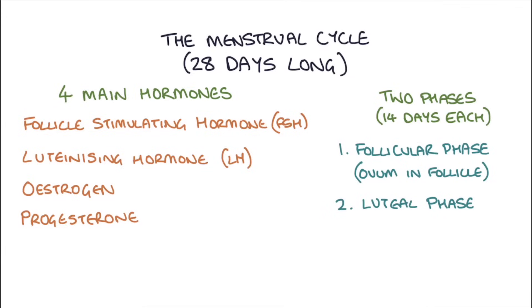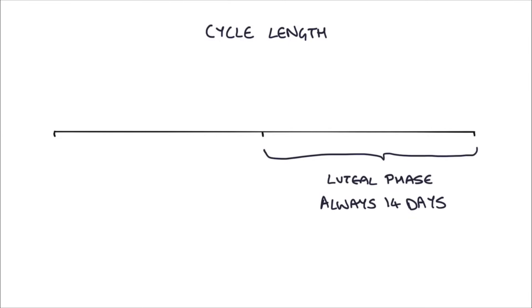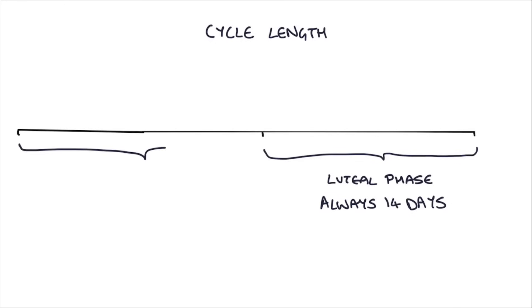The second phase is called the luteal phase because the egg has exited the ovary during ovulation, and what's left inside the ovary is called the corpus luteum. In many women the cycle is different lengths — for example 21 days or 35 days — and the luteal phase is always 14 days long. So when the cycle is shorter, the follicular phase is shorter, and when it's longer, the follicular phase is longer.